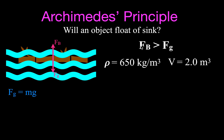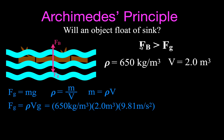The weight of the object we get using Newton's second law: Fg = mg. We don't know the mass directly, but from the density equation, mass equals density times volume. So the weight equals 650 kg/m³ times 2 m³ times g, and we find that the object weighs 12,753 Newtons.